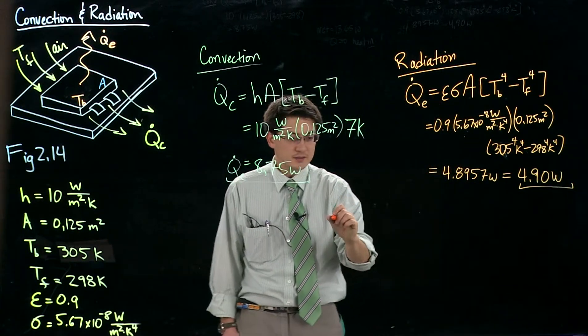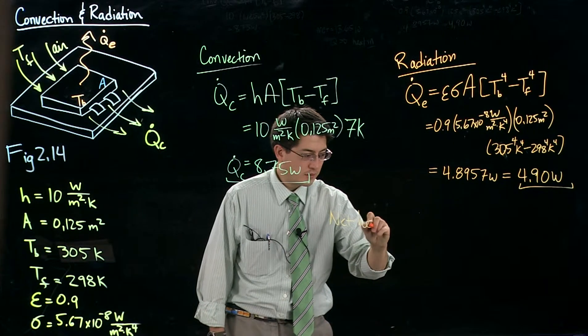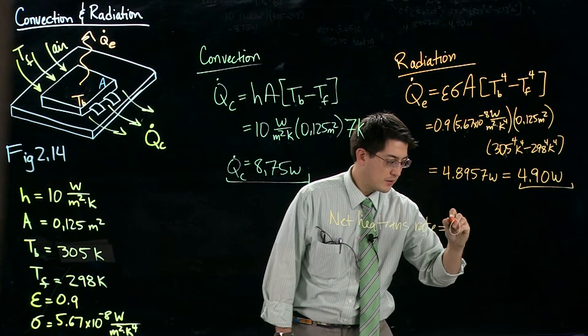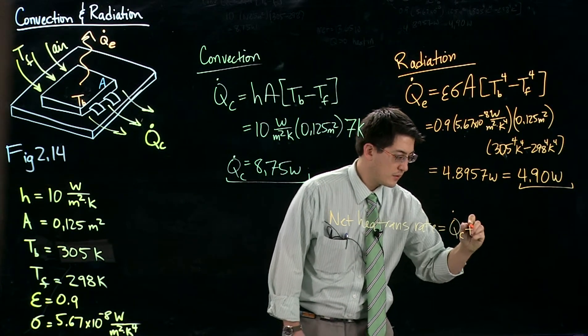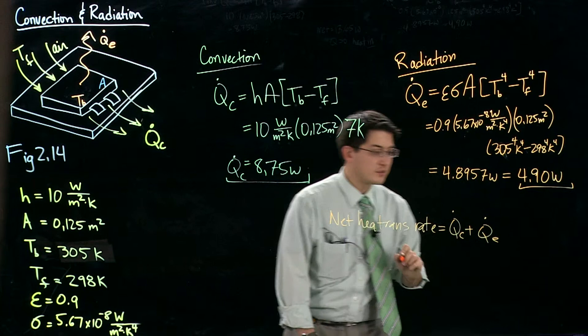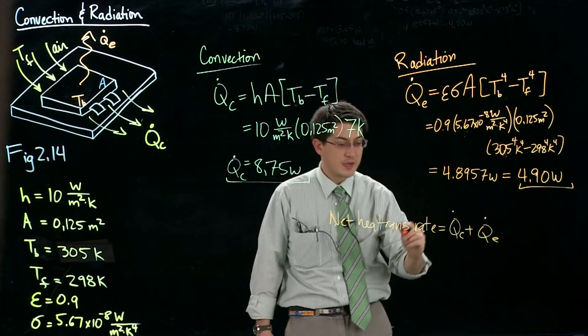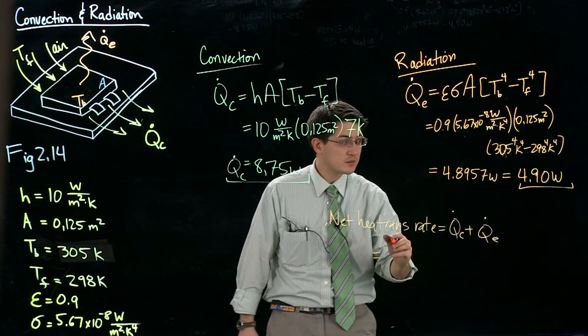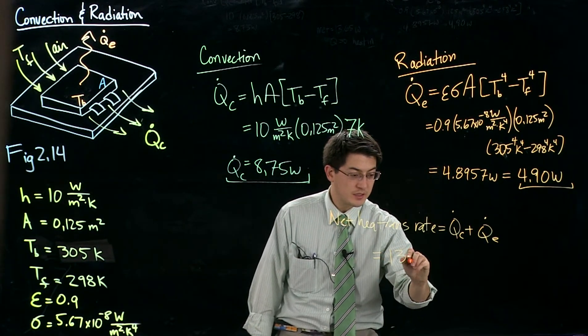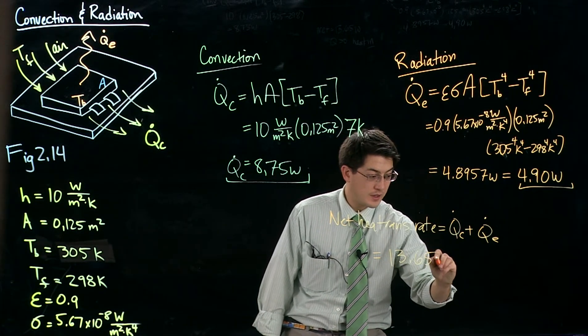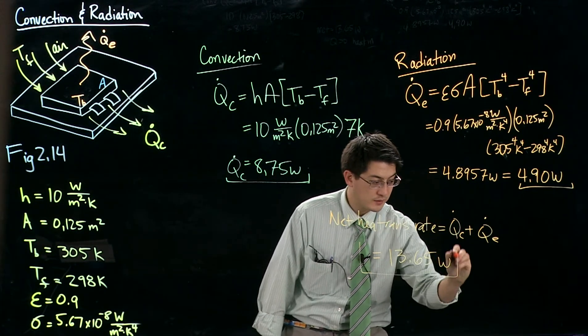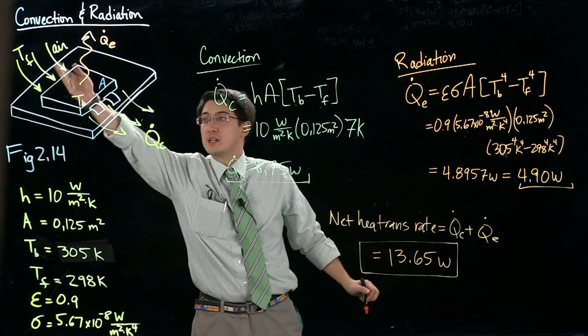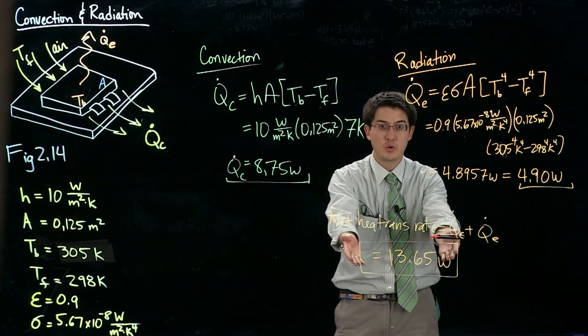Net heat transfer rate is going to be the convection plus the radiation. So we have 8.75 watts plus 4.9 watts, which gives us 13.65 watts net heat transfer from this chip due to the combined radiation plus convection.